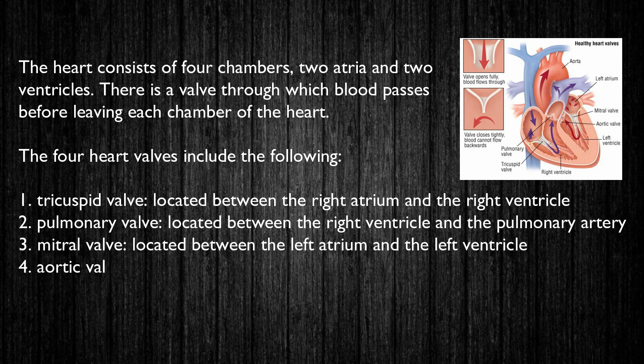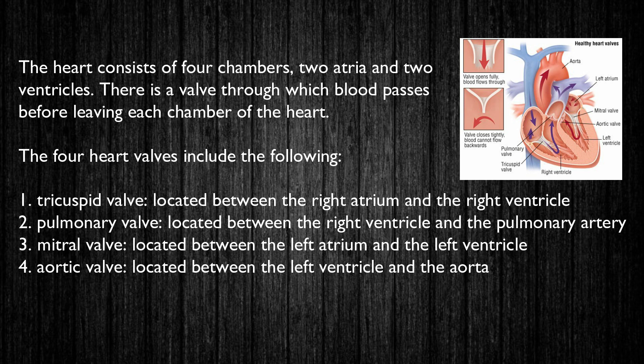These valves are actual flaps that are located on each end of the two ventricles. They act as one-way inlets of blood on one side of the ventricle and one-way outlets of blood on the other side of the ventricle. Normal valves have three flaps, except the mitral valve, which has two flaps.